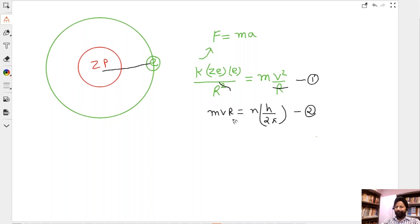You have two variables here, r and v. Everything else is known. It's a known quantity. Look at this: k, z, e, right, m, and then what else? n, n is in terms of n we'll find. So h by 2π is a known quantity. Everything is a known quantity, right? Two equations, two variables. I can use elimination method. So let's do the elimination method. v is equal to nh by 2πmr.